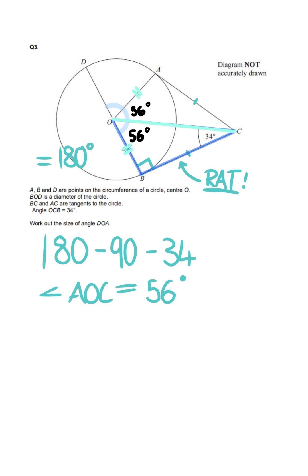Finally, to find angle DOA, all we have to do now is take away 56 from 180 two times. This means that we've now found that DOA is equal to 68 degrees.